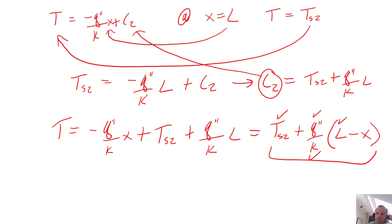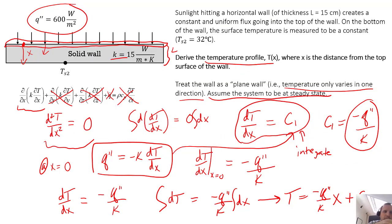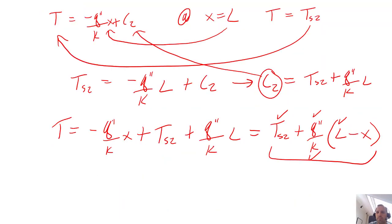But just to check our work, let's try substituting some numbers into it. First, let's look at what is the temperature when x is equal to L. In other words, what's the temperature here? Well, we know what it is - it's 32 degrees C - but we want to make sure that our equation accurately reflects that. So if we plugged in L for x, we see that L minus L is 0. This whole term goes away and we're left with T_s2, which is 32 degrees. So we're good there.